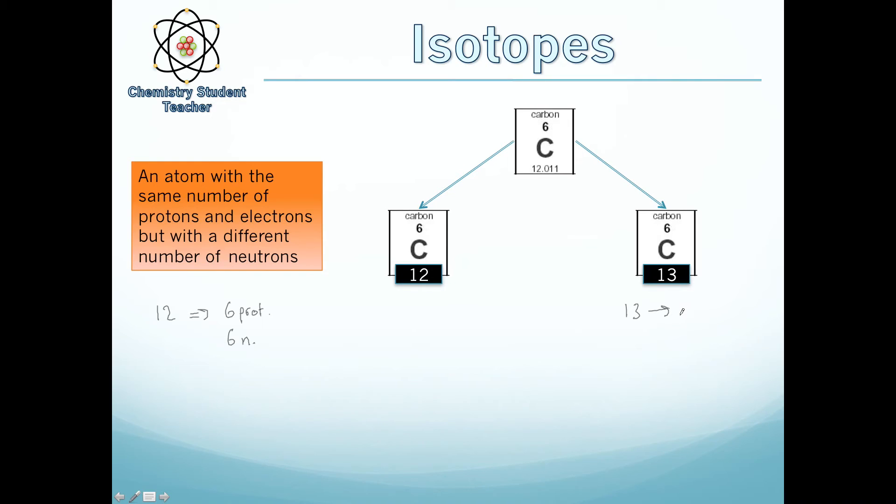That's why we get 12.011 as the atomic mass of carbon, because we have these different isotopes. Now how we get that exact number is we take the average. But in nature you have a different percentage of each one.